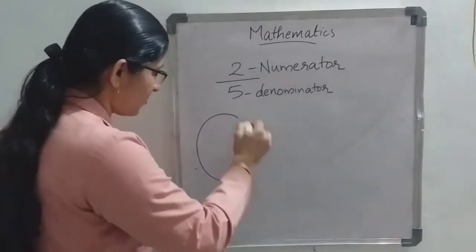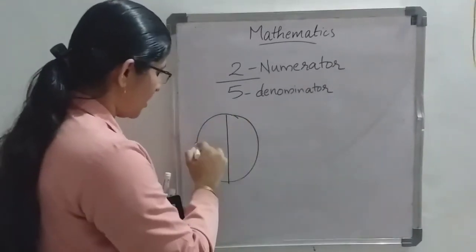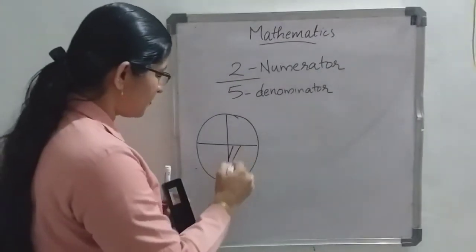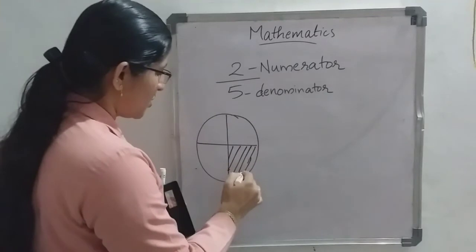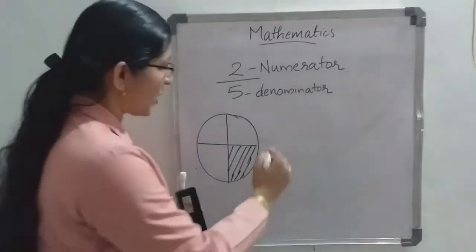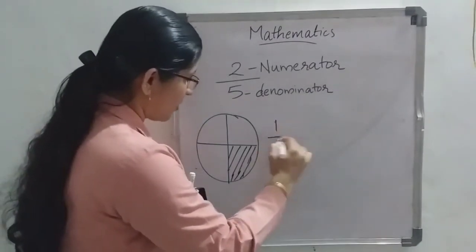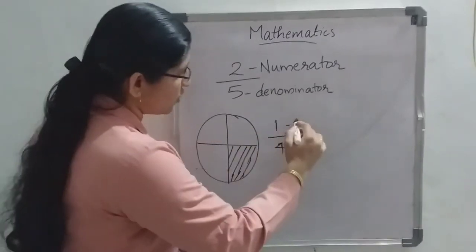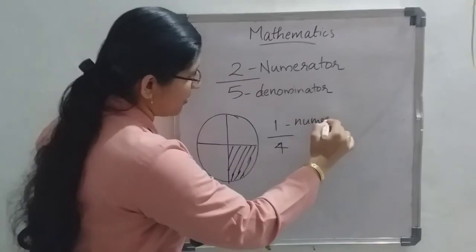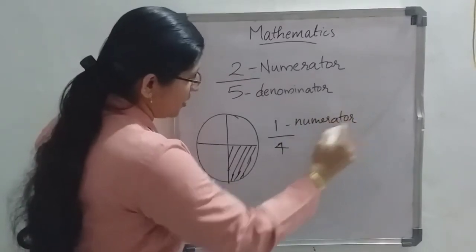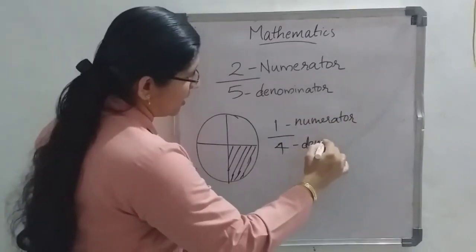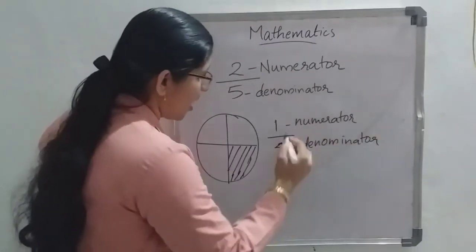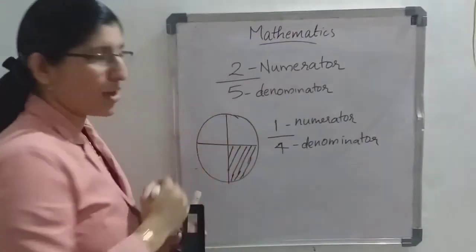For example, a cake equally divided into 4 pieces. I shaded 1 piece. Then the fraction is 1 by 4: 1 shaded part, and 4 equal parts in total. So this 1 is the numerator and 4 is the denominator. The 1 means the part shaded, and 4 means the total number of equal parts.